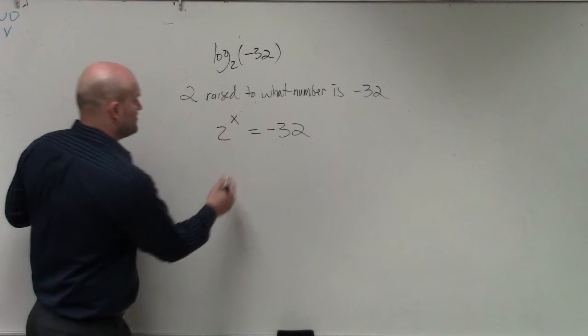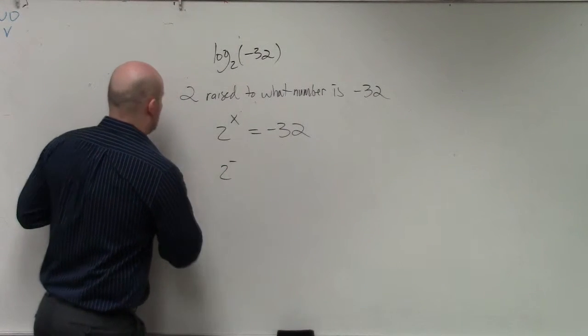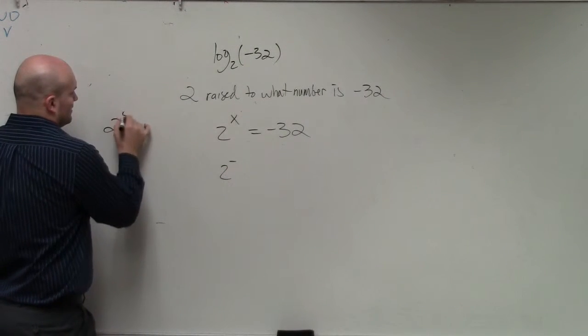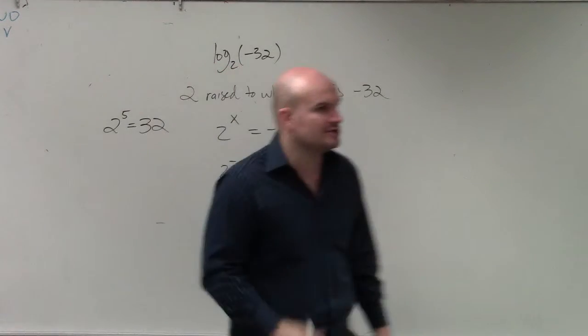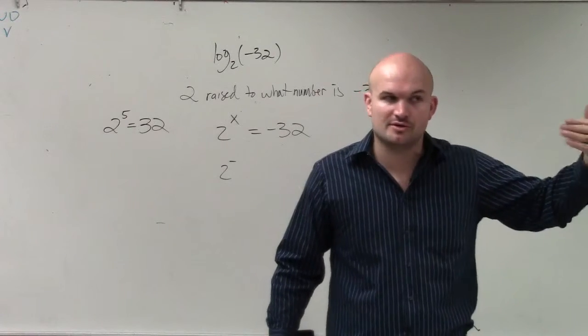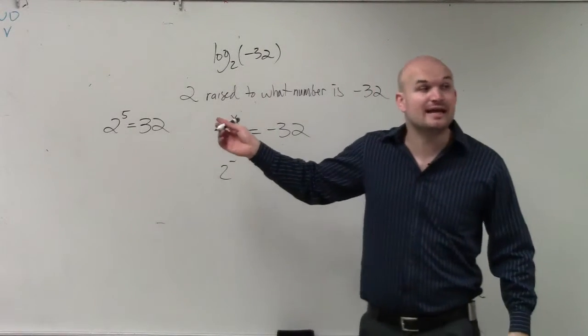2 raised to what power gives you negative 32? Well, the first number that usually comes up to people is we know that 2 to the fifth power, if you guys remember my last problem I did, 2 to the fifth power is 32. 2 multiplied by itself 5 times is 32. But it's positive 32, not negative 32.